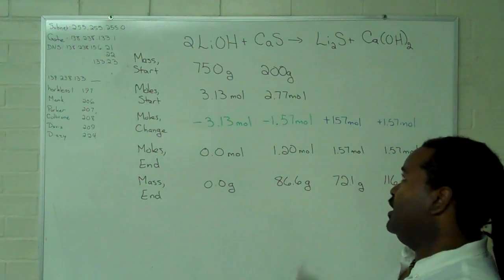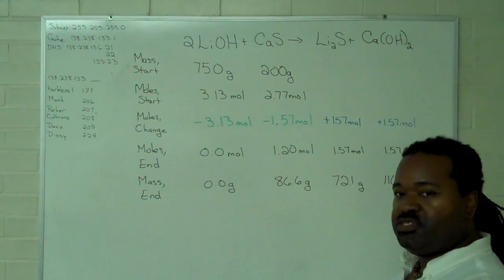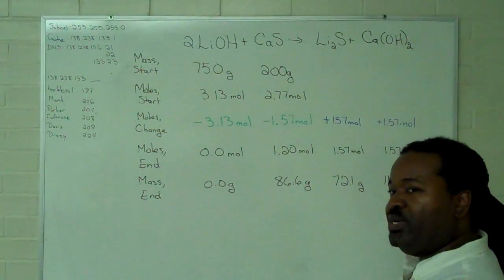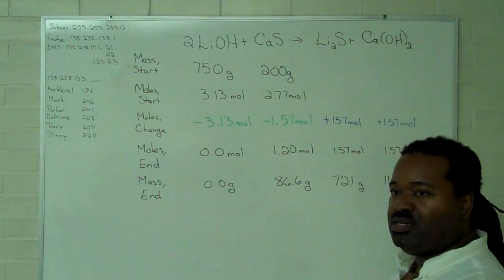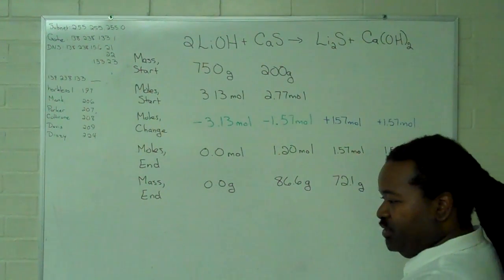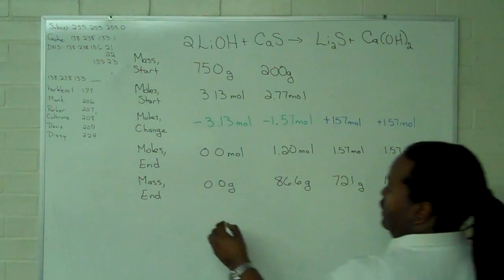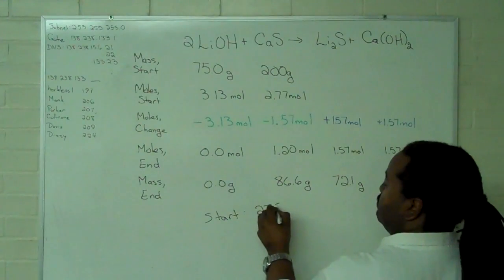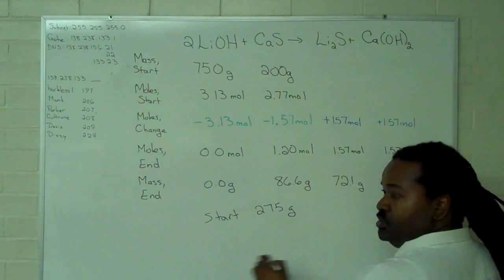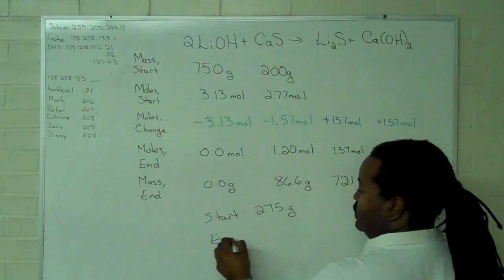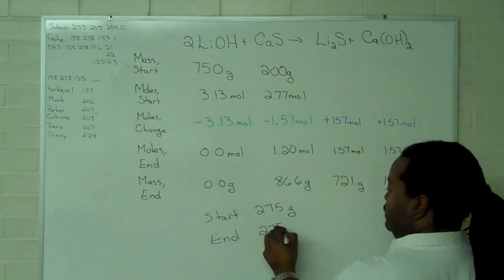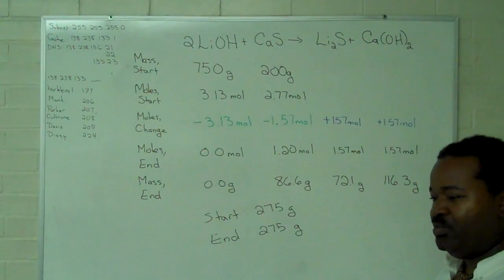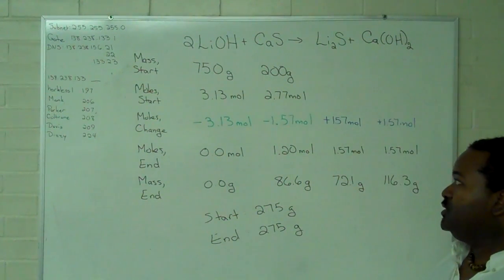What I will tell you is that because of conservation of mass, the only difference in the total mass at the start and the total mass at the end should be due to just some round-off errors. And so, in this case, we start with 275 grams, and you should end with 275 grams. In this case, round-off error didn't matter quite so much.